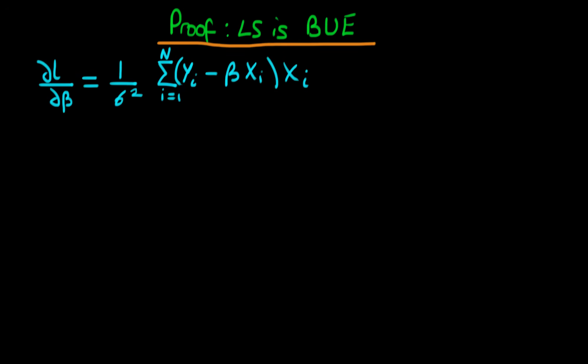In this video we're going to continue our comparison between least squares estimates of linear regression models and maximum likelihood estimates. In doing so we're going to prove that least squares estimators are not only BLUE under certain assumptions, but also — under some additional assumptions — the best unbiased estimator overall, whether we're talking about a linear estimator or not.